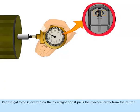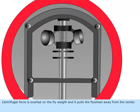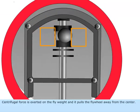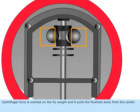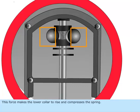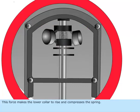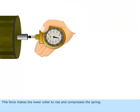Centrifugal force is exerted on the flyweight and it pulls the flywheel away from the center. This force makes the lower collar to rise and compresses the spring.